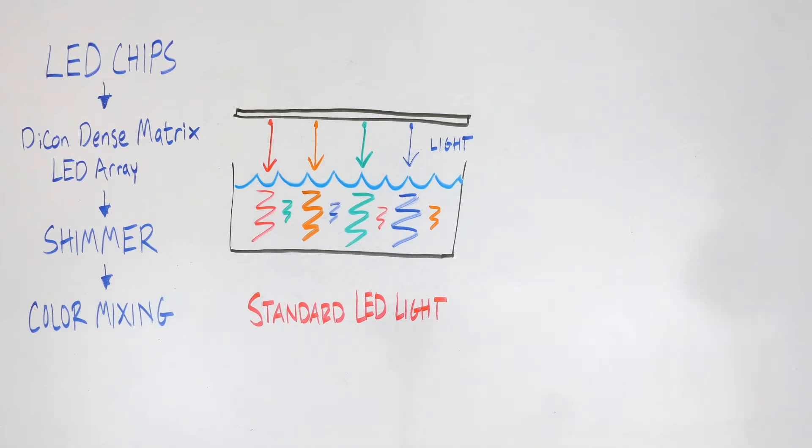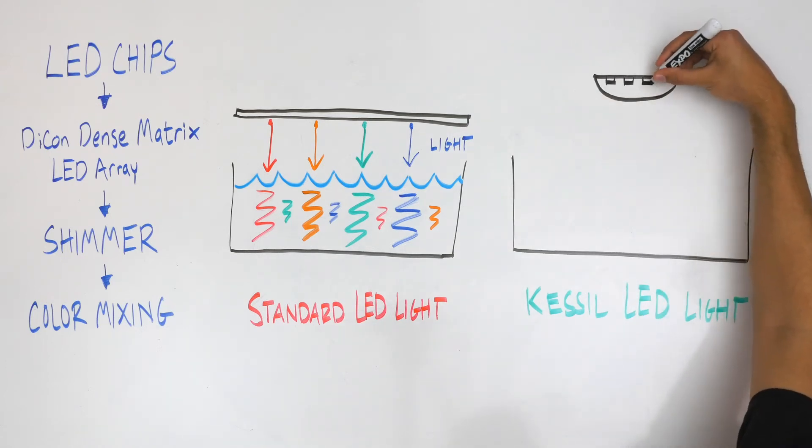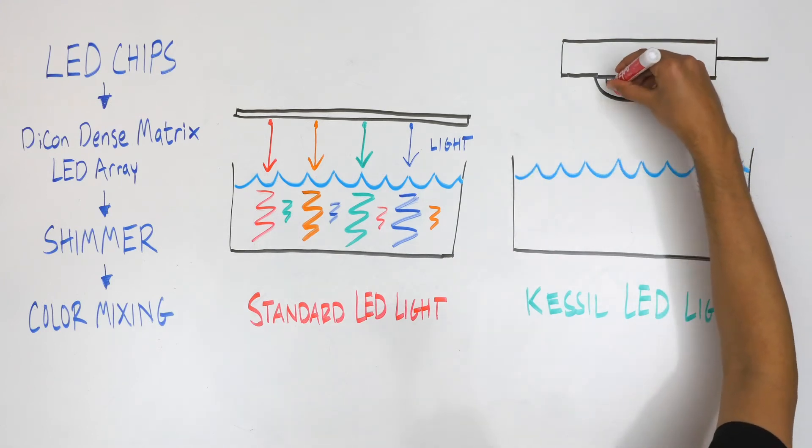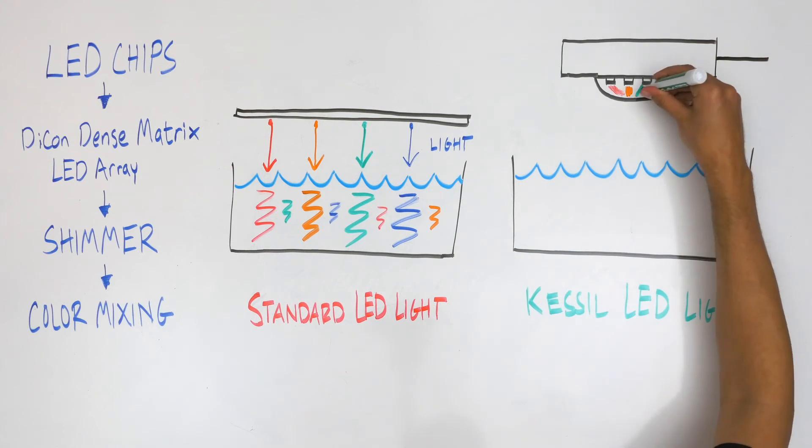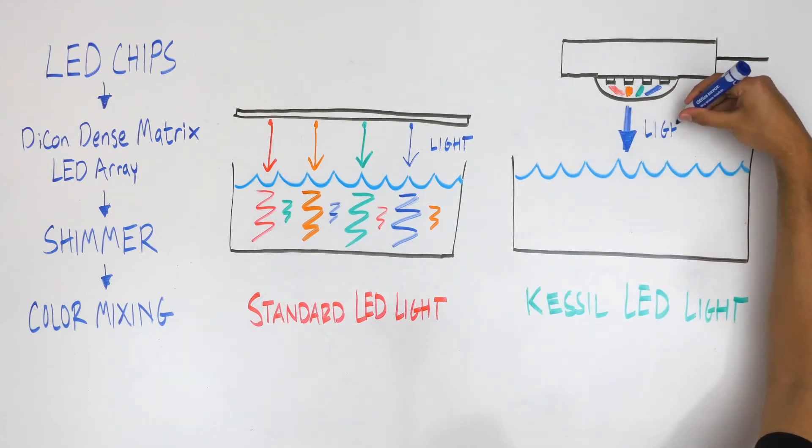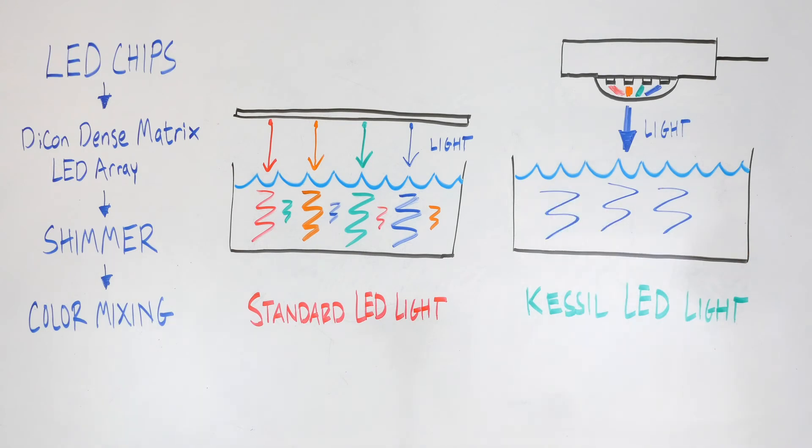In Kessel lights, every spectrum is blended before leaving the light. Once again, this is possible because every LED chip is consolidated into one compact dense matrix array. The result is uniform light across the board that has the natural appearance of sunlight in rivers, lakes, or oceans. Like we said earlier, more control over the emitted light means better results.